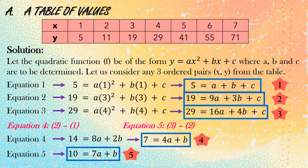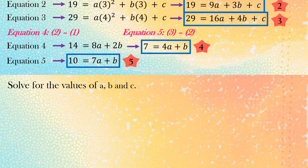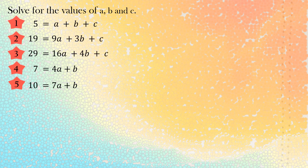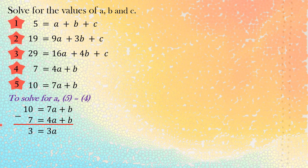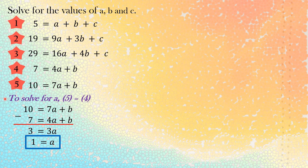Now we solve for the values of a, b, and c. To solve for a, we subtract equation 4 from equation 5: 10 minus 7 is 3, 7a minus 4a is 3a, and b minus b cancels out. So 3 equals 3a. Dividing the whole equation by 3, the value of a is equal to 1.